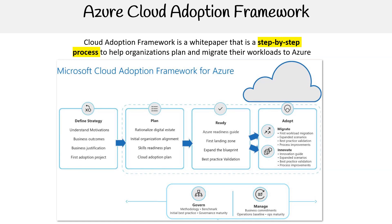Plan: this stage includes rationalizing the digital estate by evaluating current digital assets. Initial organization alignment ensures everyone is aligned with the migration's goals. A skills readiness plan equips teams with necessary cloud skills. The Cloud Adoption Plan lays out a roadmap for the cloud transition.